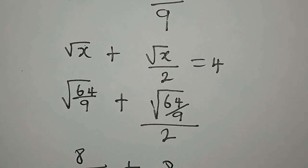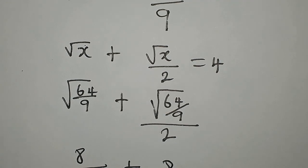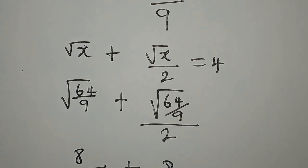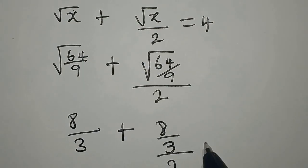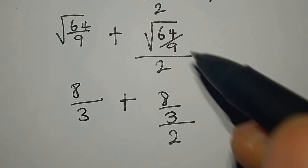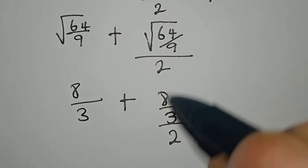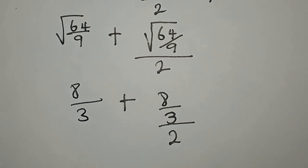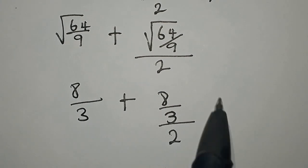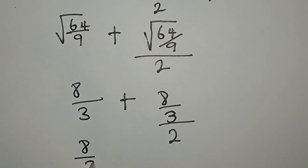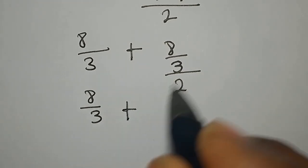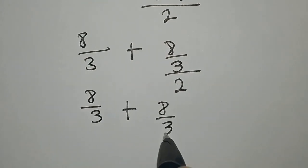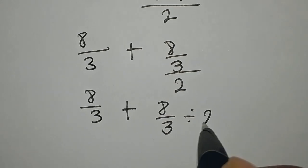√64 is 8, √9 is 3, plus √64 again is 8 over 3, and we divide that by 2. We can turn this around to get 8/3 plus 8/3 divided by 2.